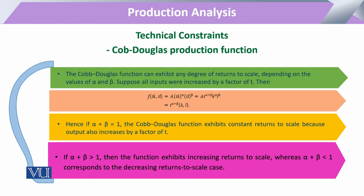These two elasticities of production, alpha and beta, are related such that alpha plus beta equals 1. When alpha plus beta equals 1, we say that the Cobb-Douglas production function exhibits constant returns to scale. We will explain returns to scale in the next slide.